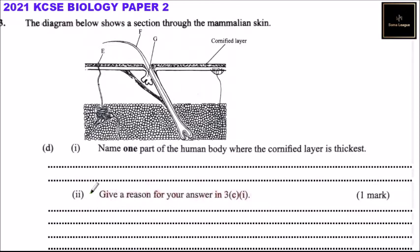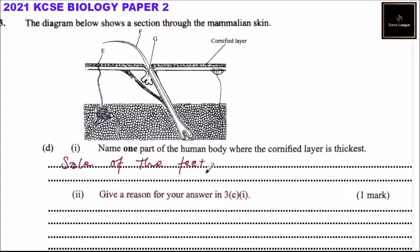Part 3c, roman numeral one: name one part of the human body where the cornified layer is thickest. The areas with the thickest cornified layer are the sole of the feet and the palm of the hand.